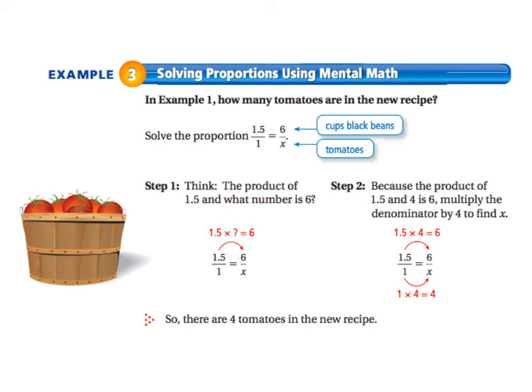It says, in example 1, so we have to think backwards a little bit, how many tomatoes are in the new recipe? So it says solve the proportion.